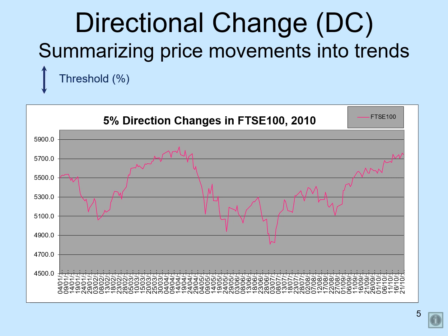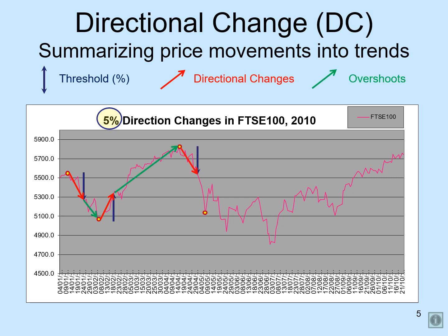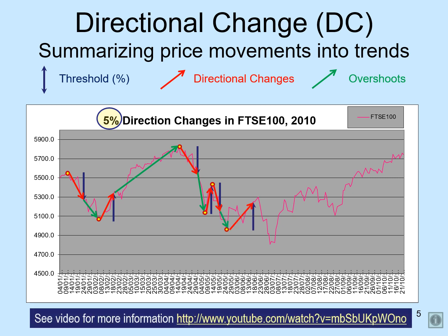The magnitude of the threshold is determined by the observer. As an example, suppose an observer uses 5% as the threshold. Then we look for extreme points from which the price rose or dropped by 5% or more. The link below explains DC in greater detail.